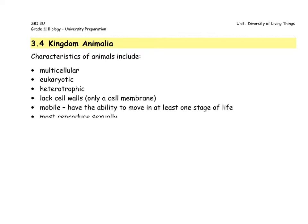Organisms belonging to Kingdom Animalia must have been mobile at some stage in life. You may be thinking, well, corals, for instance, don't move. But at some stage in their life, they must have been able to move, which is why we can classify them in Kingdom Animalia. And last but not least, most organisms in Kingdom Animalia reproduce sexually — there has to be some sort of joining of male and female gametes or sex cells that fuse to produce offspring. The exception would be something like an organism that loses a limb and is able to regrow it, like some starfish.